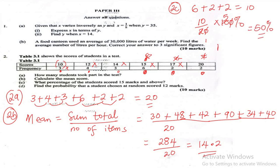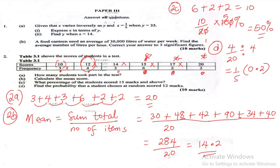For question 2d, find the probability that a student chosen at random scored 12 marks. Four people scored 12 out of a total of 20 students. The probability is 4 over 20, which simplifies to 1 over 5, or 0.2. So our answers are: 2a = 20, 2b = 14.2, 2c = 50%, and 2d = 0.2 or 1/5.